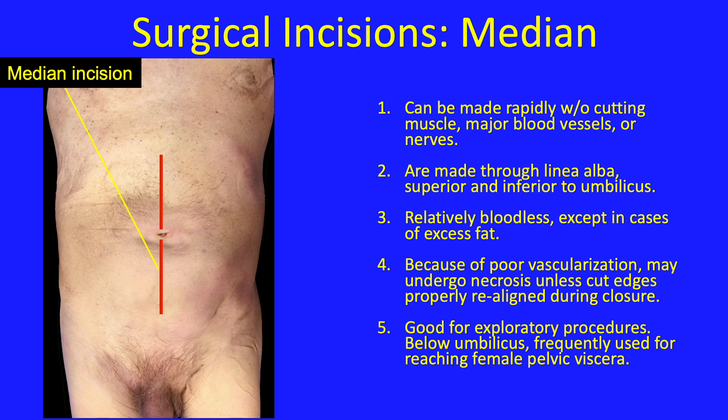However, because of poor vascularization, incisions at this spot may undergo necrosis unless cut edges are properly realigned during closure. This is why surgeons practice their suturing skills repeatedly. This is the type of incision a surgeon makes when they really do not know what to expect inside the patient — they are good for exploratory procedures.